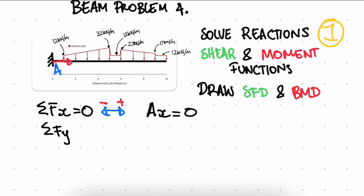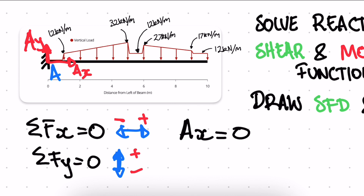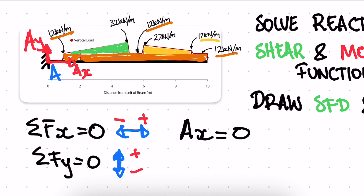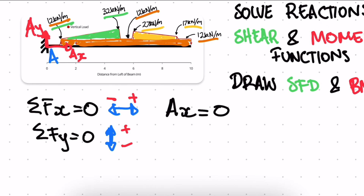For the sum of forces in the y-direction equal to zero, taking up as positive and down as negative, the total force acting on the beam will go into the reaction at point A. The total force equals the area of the distributed load shape. We break this shape into sections: an underlying 12 kN/m rectangle, a triangle, and a trapezoidal section.